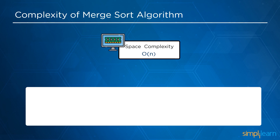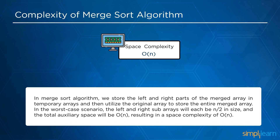Moving on to the space complexity of merge sort, the space complexity is O(n). We store the left and right parts of the merged array in temporary arrays and then utilize the original array to keep the entire merged array. In the worst case, the left and right sub-arrays will each be n/2 in size, making the total auxiliary space O(n), resulting in a space complexity of O(n).